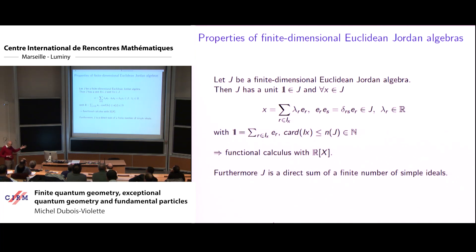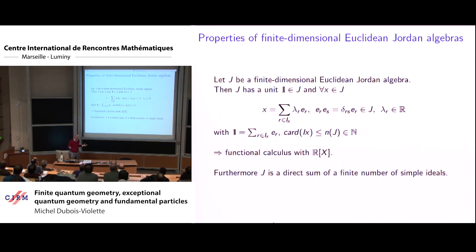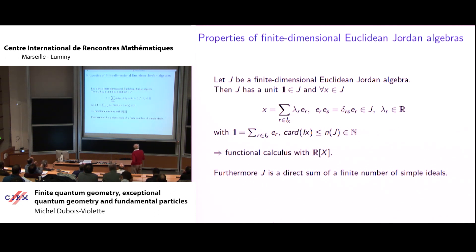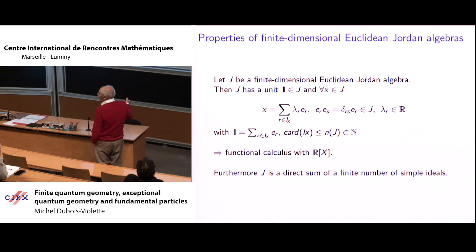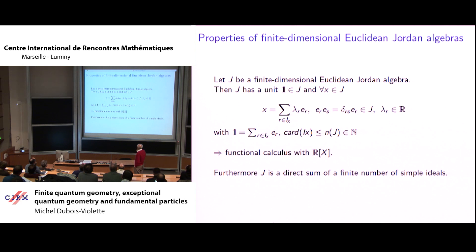In the full list it is the only exceptional case, but as soon as you have this one somewhere you cannot content yourself with non-commutative geometry — you have something else to do. Let me now give the properties of this finite-dimensional Jordan algebra. First you have the spectral theory, where projectors give a resolution of the identity, and the number of projectors is bounded by a number depending only on the algebra itself.